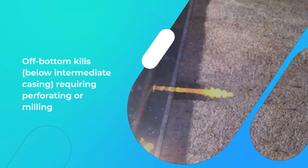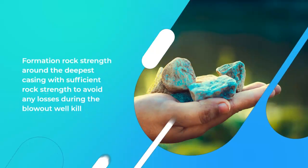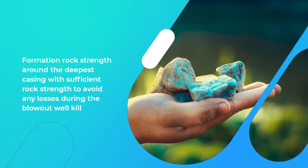Off-bottom kills below intermediate casing, requiring perforating or milling. Formation rock strength around the deepest casing should be sufficient to avoid any losses during the blowout well kill.